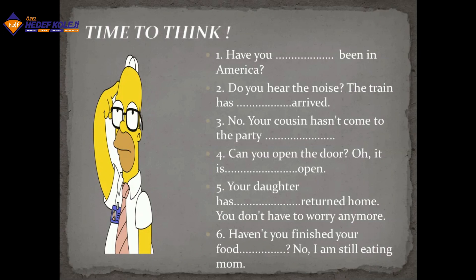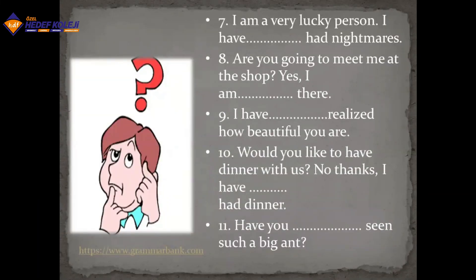'I'm a very lucky person, I have never had nightmares.' 'Are you going to meet me at the shop? Yes, I'm already there.' 'I have just realized how beautiful you are.' 'Would you like to have dinner with us? No thanks, I have already eaten.' — because it's in the middle of the sentence, we use 'already' between 'have' and the verb. 'Have you ever seen such a big one?'